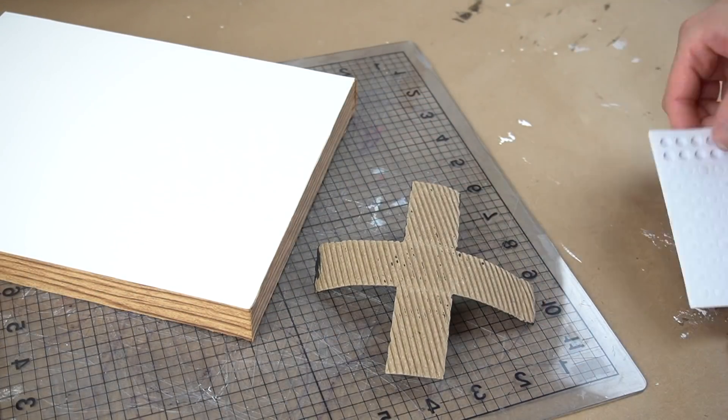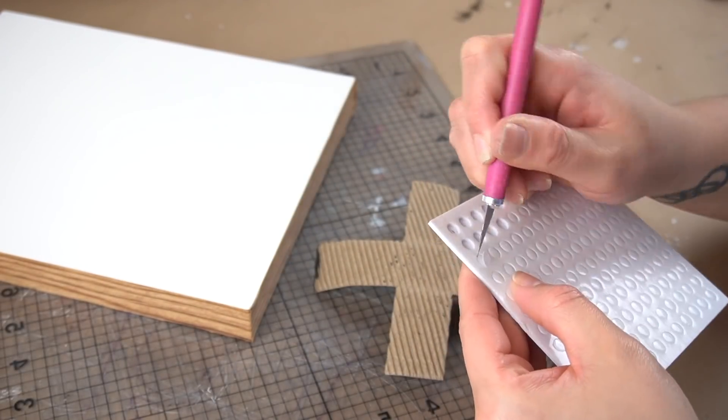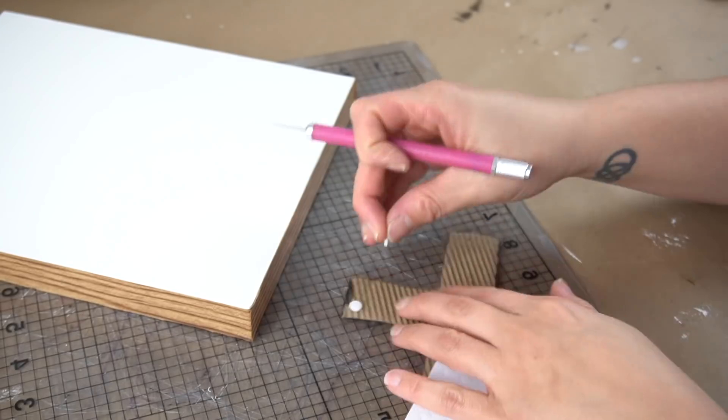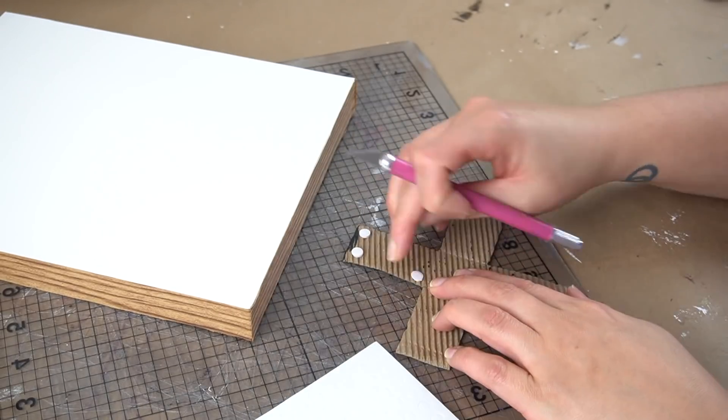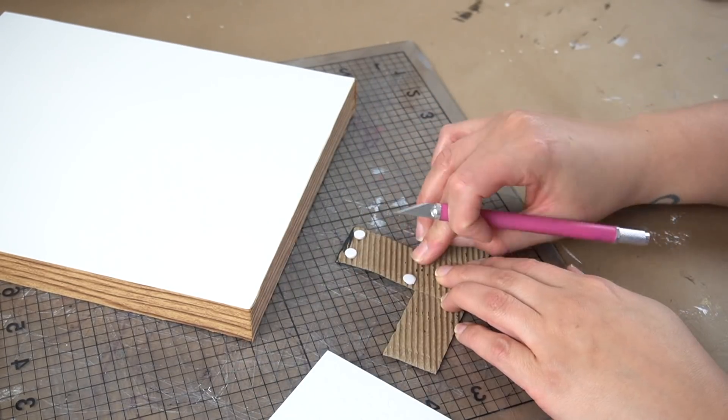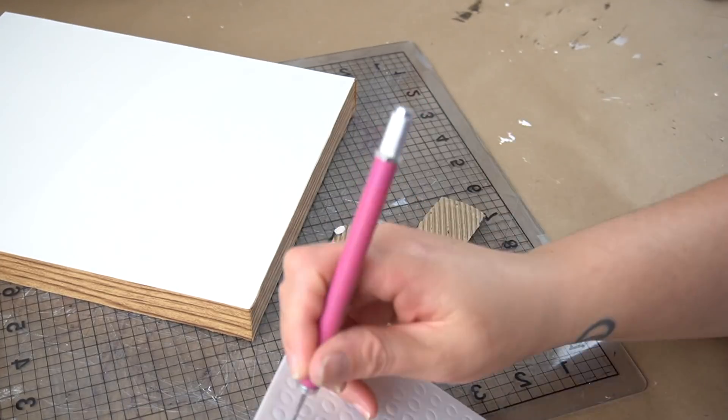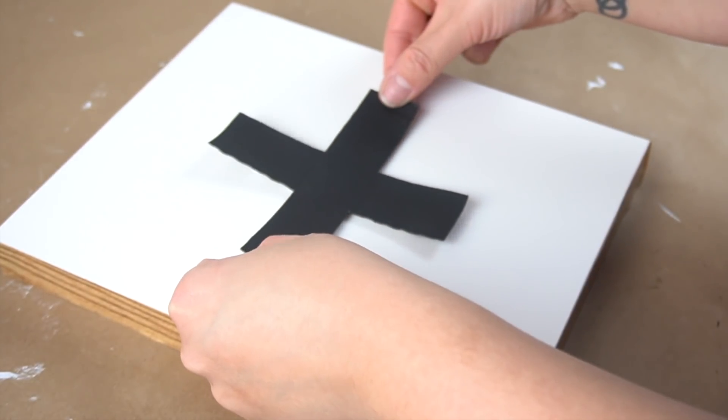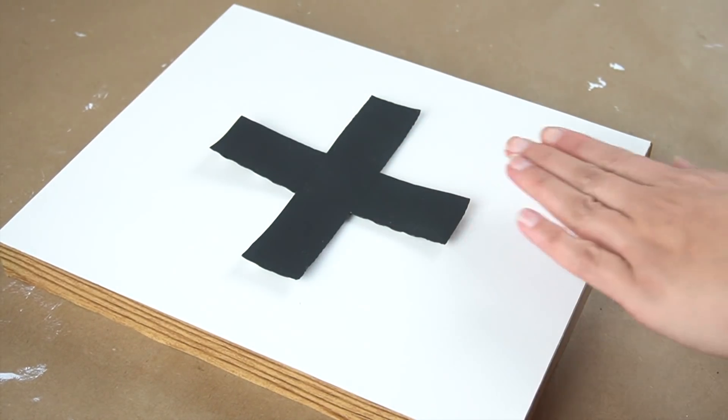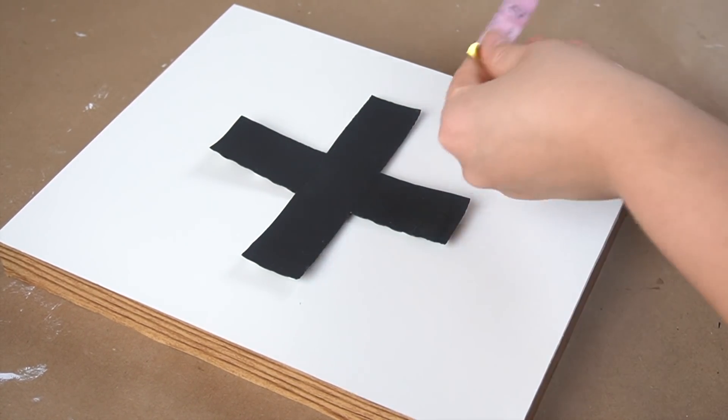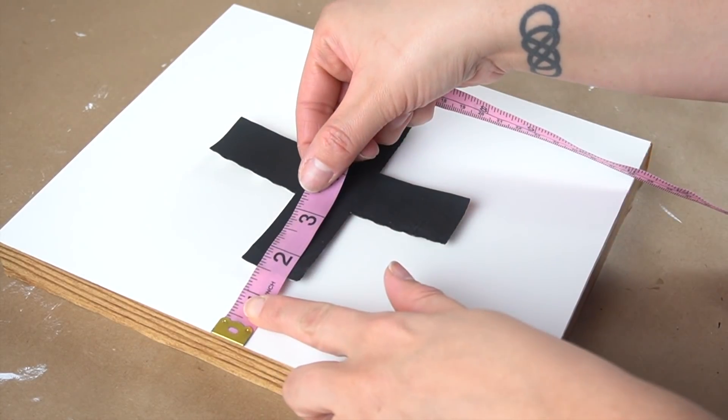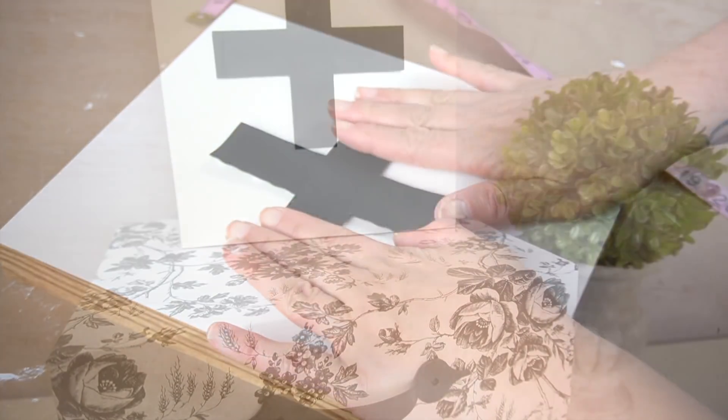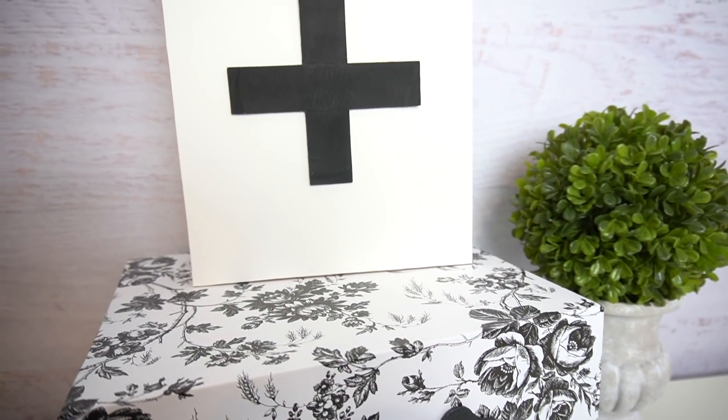Next, after that was done, I took the cross and these little sticky dots and applied it all over the back of that cross. I wanted the cross to kind of lie a little bit raised from the frame, so that's why I went ahead and used these, but you can always adhere it directly on. And the third trash to treasure was complete.